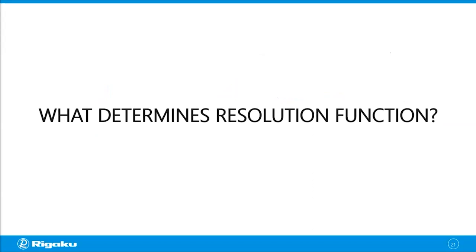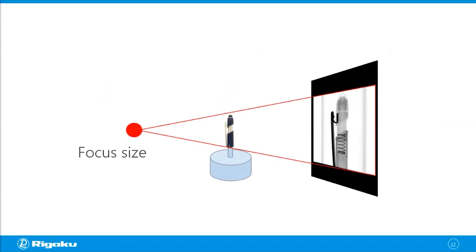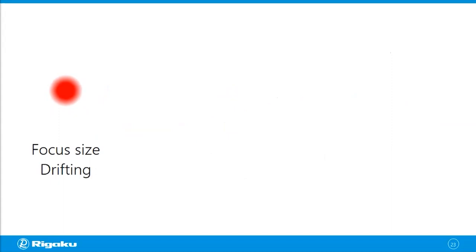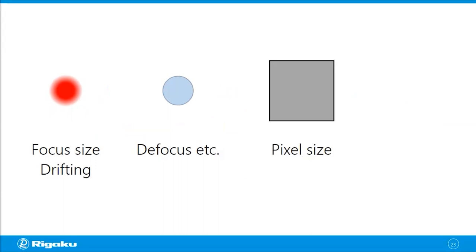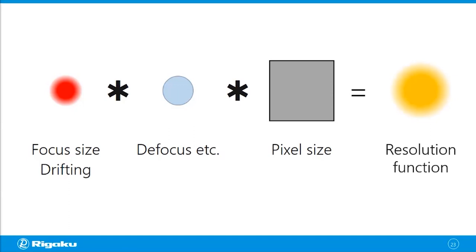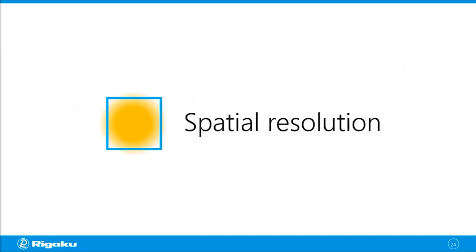What determines the resolution function? It depends on the X-ray focus size, the pixel size on the detector, and the overall geometry. If the focus size is drifting, that drift needs to be taken into account as well. Technically you can calculate the resolution function by convolving all of these together, but practically it's easier to measure the spatial resolution directly. The spatial resolution is related to both the resolution function and voxel size, and it tells you the smallest feature size you can resolve with the setting you're using.